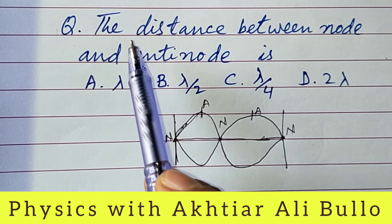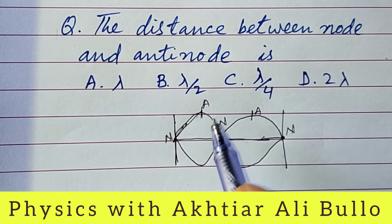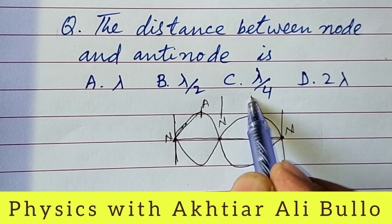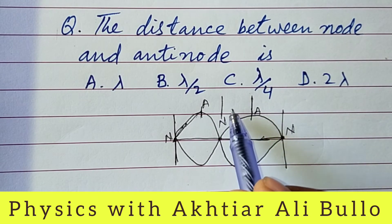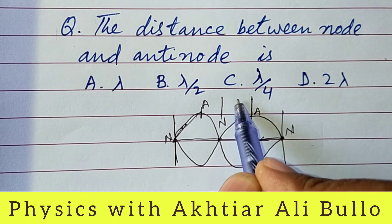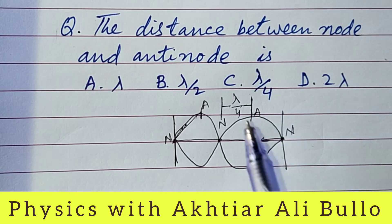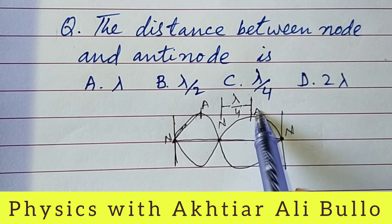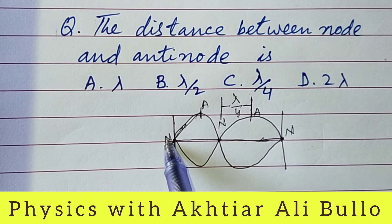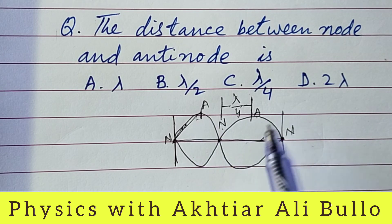The statement asks for the distance between a node and an antinode — the distance between a node and antinode. That distance will be equal to lambda upon 4. So the distance between a node and an antinode is equal to lambda upon 4, and the distance between two successive nodes or two successive antinodes is equal to lambda upon 2.